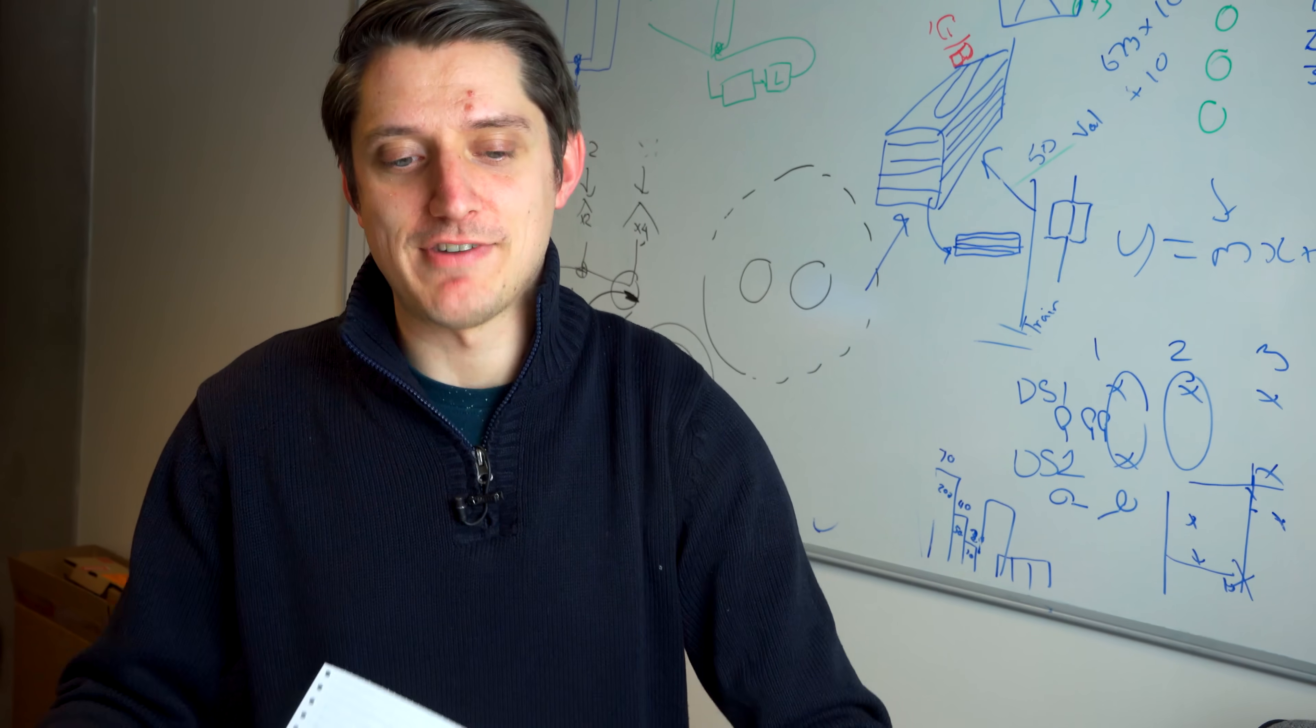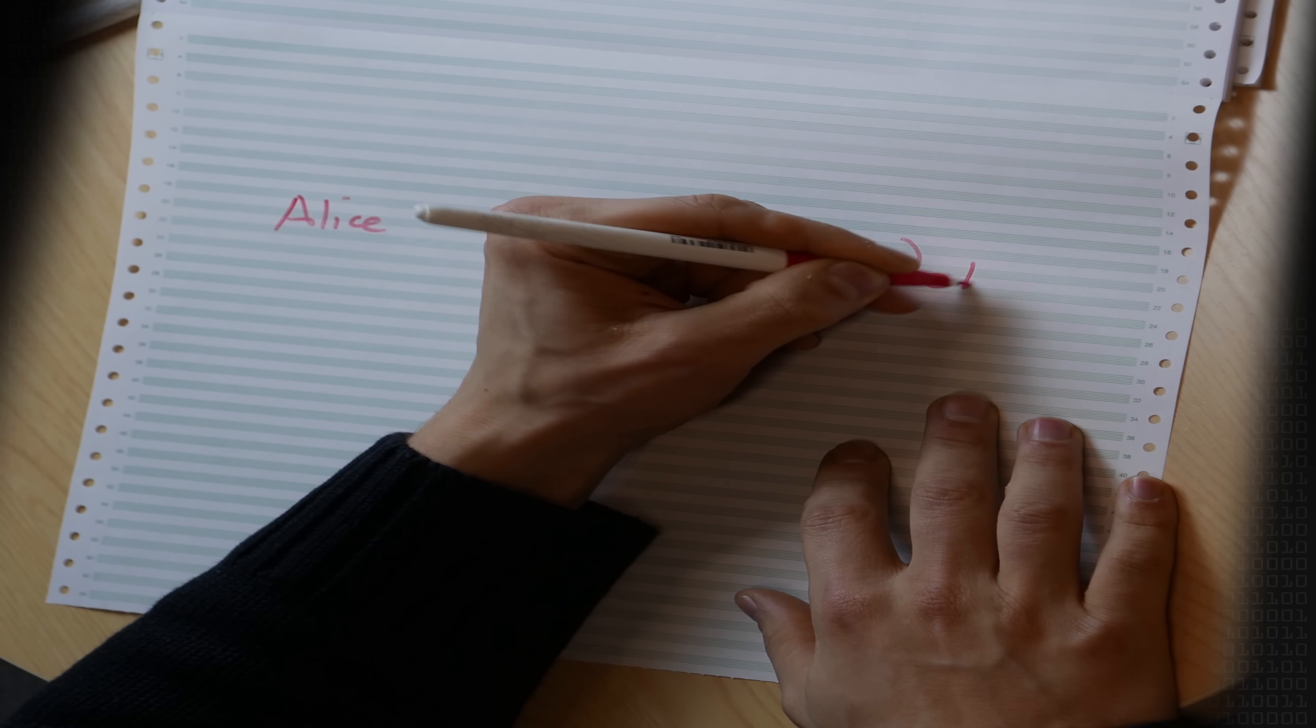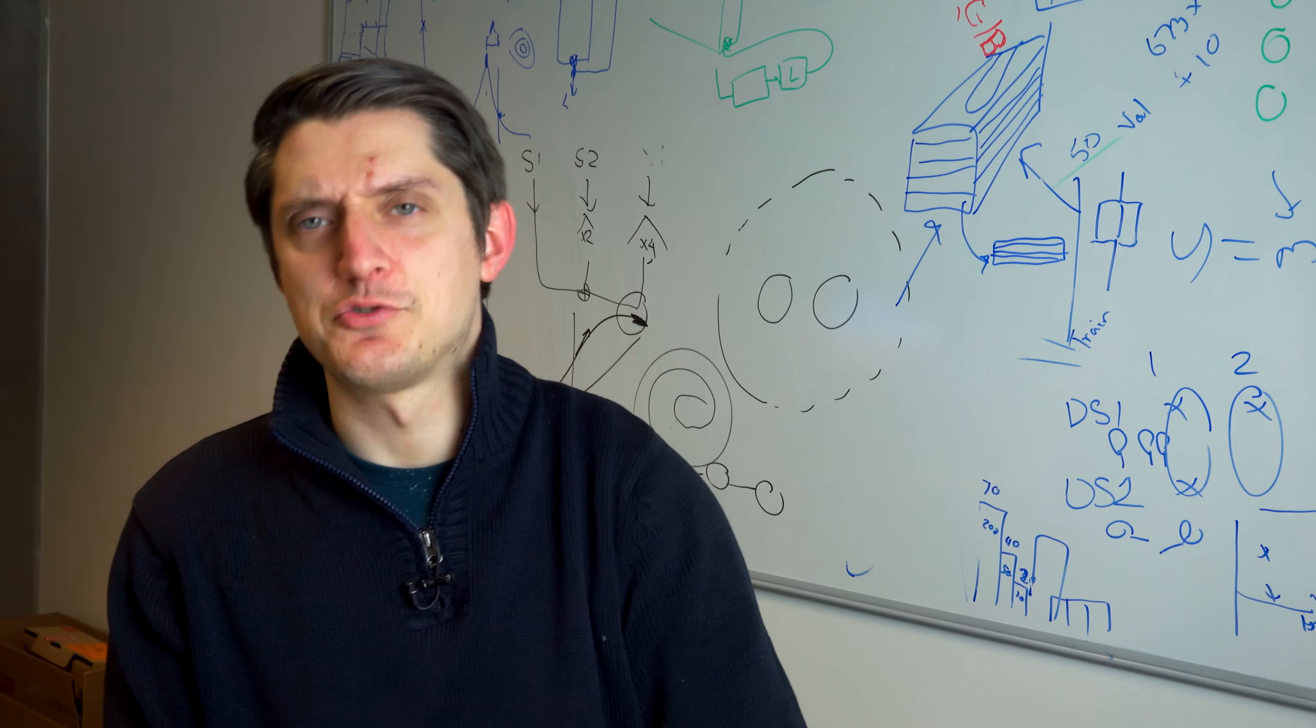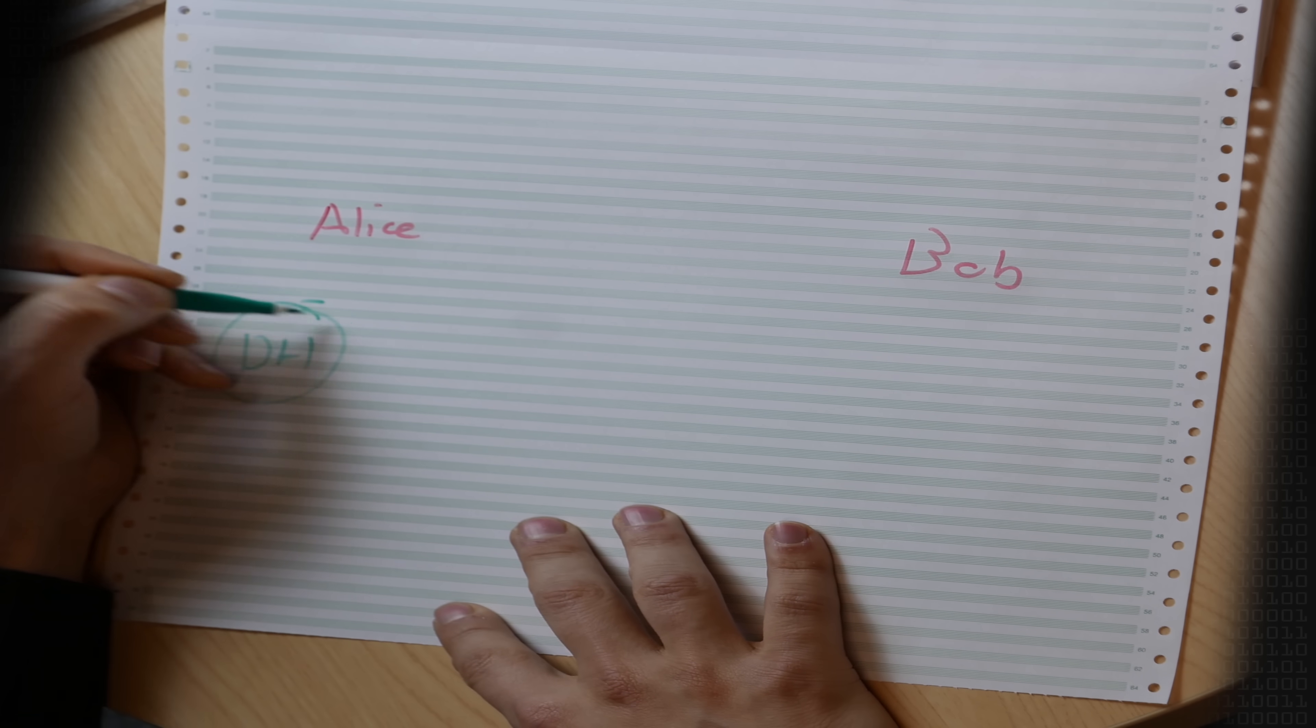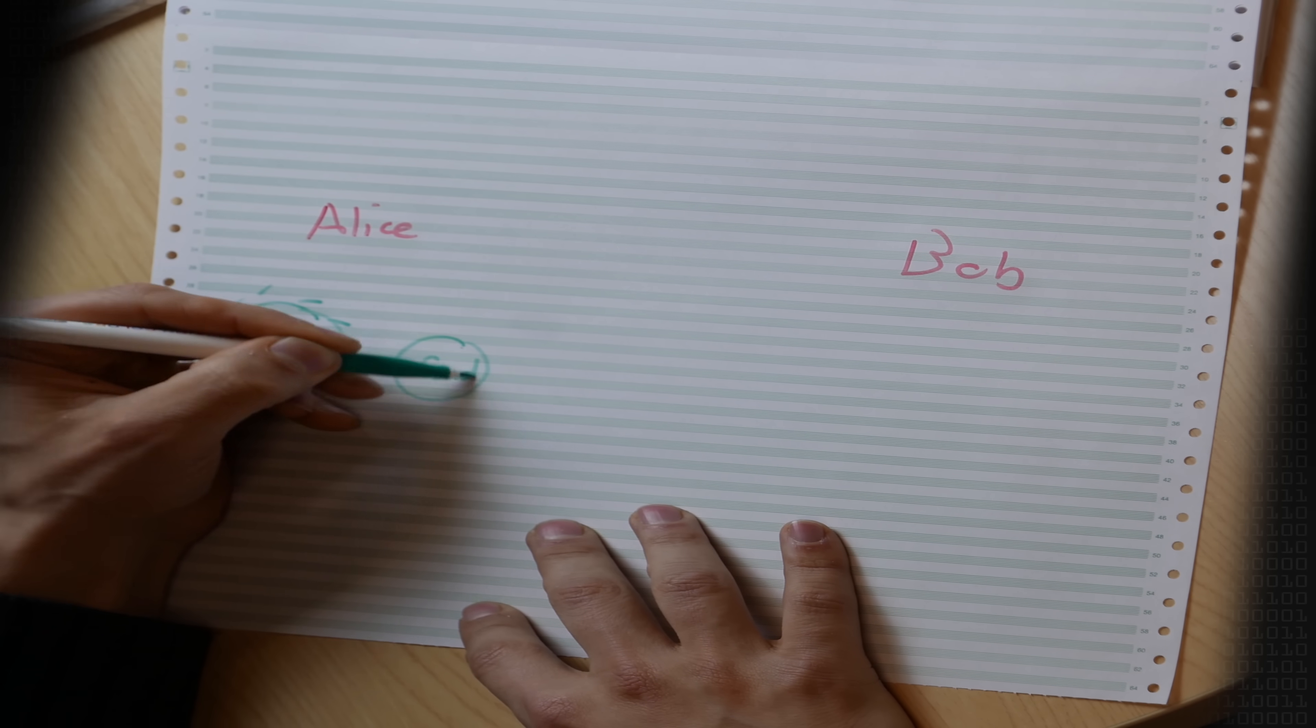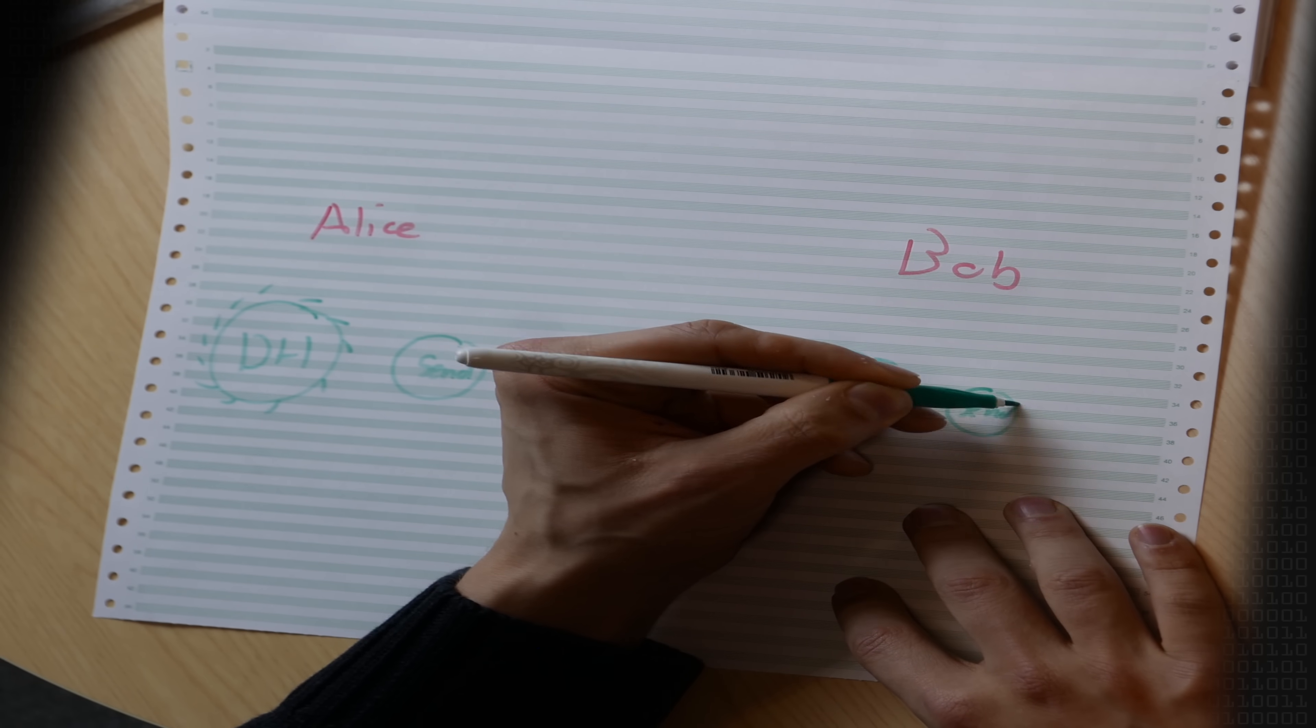Let's have a look at how this actually works in practice. I'm going to simplify a bit by drawing these ratchets as actual physical ratchets rather than keys and key pairs. So we have our two classic parties having a conversation, Alice and Bob. Alice has three KDF chains that she's using. She has a Diffie-Hellman ratchet, a sending ratchet, and a receiving ratchet. Bob has the exact same thing - a Diffie-Hellman ratchet, a sending ratchet, and a receiving ratchet.